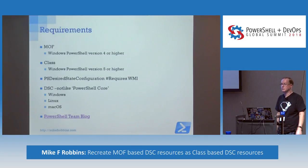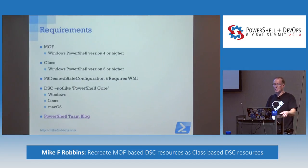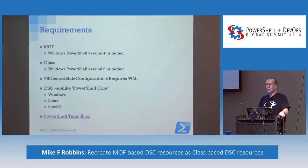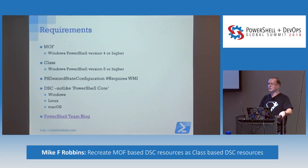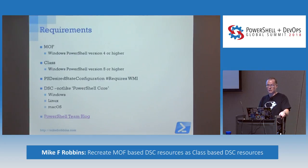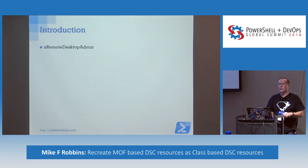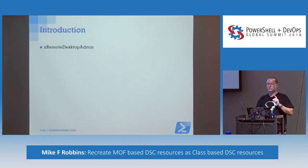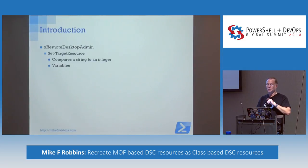The PowerShell team blog is a good place to look. And Michael Green, in a session I attended earlier today, mentioned be on the lookout for something else coming down the pipe on that blog about DSC. So I would definitely keep your eyes out for that. The way this came about is because Microsoft messed up the xRemoteDesktopAdmin resource — in the set target resource, it compared a string to an integer. Line 89 is where the problem was, and this was back in the dark ages of DSC.